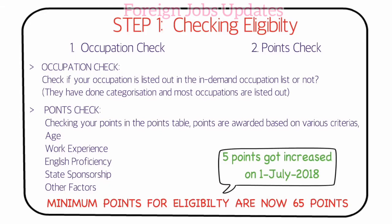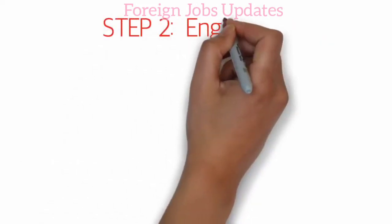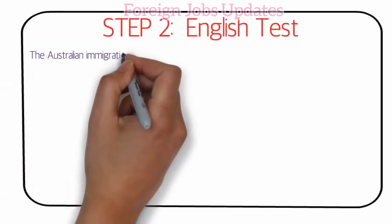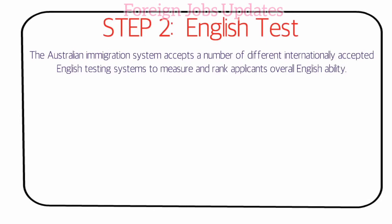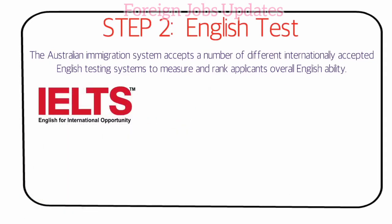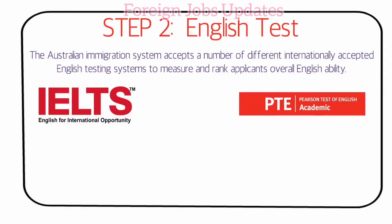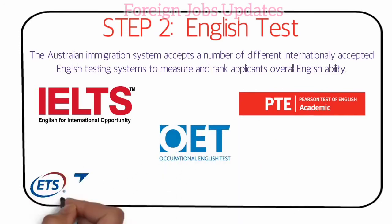So, in the first step, the eligibility check will be done. Now for Step 2, the English test: the Australian immigration system accepts a number of different internationally accepted English testing systems. The English eligibility test overall certification will be required.